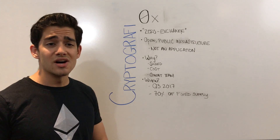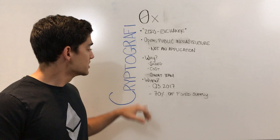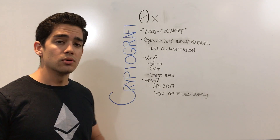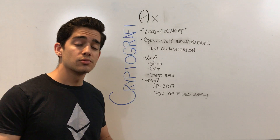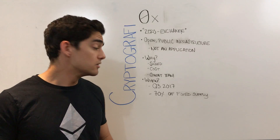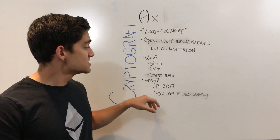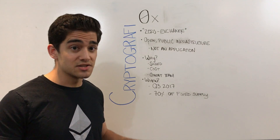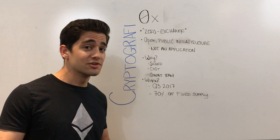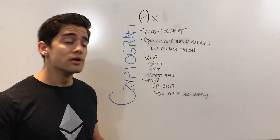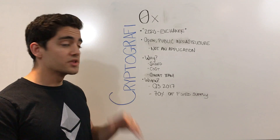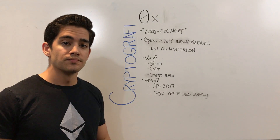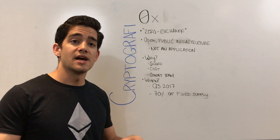And when is this all happening? You can expect their sale to go live in late Q3 of 2017, where they're selling about 70% of their fixed supply. Yes, that's a fixed supply — so there's no inflation and they're not creating any more within their crowd sale.